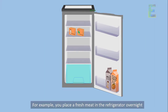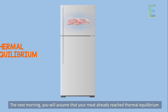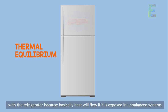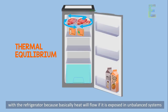For example, you place a fresh meat in the refrigerator overnight. The next morning you will assume that your meat already reached thermal equilibrium with the refrigerator, because basically heat will flow if it is exposed in unbalanced systems.